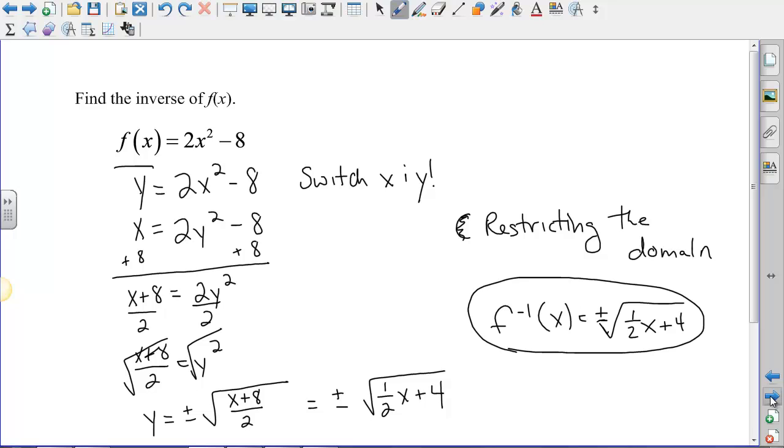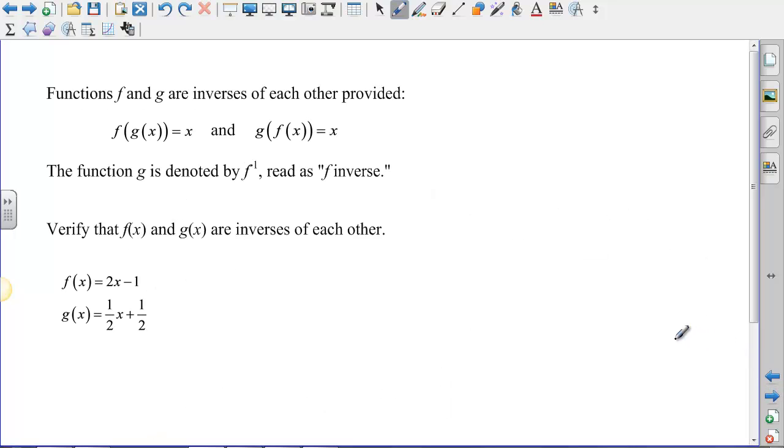And then there's one last thing that we need to talk about, and that's how we verify inverses as inverses. There's a theorem that says functions f and g are inverses of each other if f(g(x)) = x and g(f(x)) = x. And the function g is denoted by f to the negative 1, read as f inverse. It says verify that f(x) and g(x) are inverses of each other.